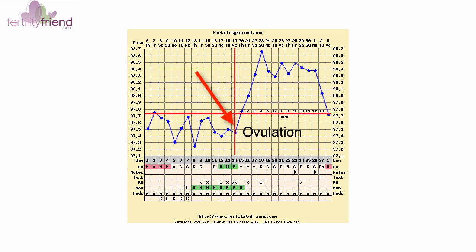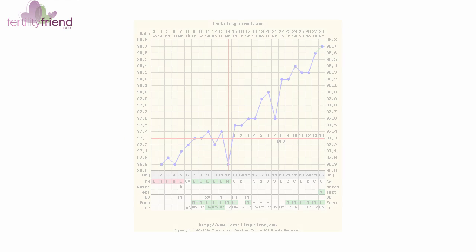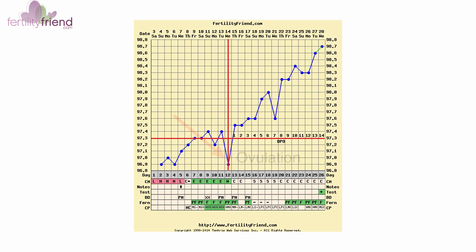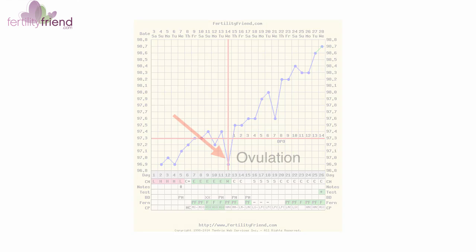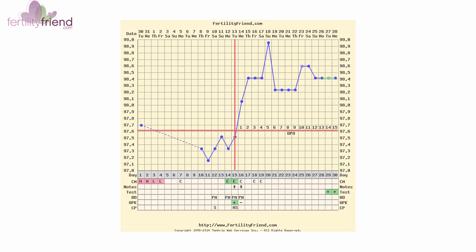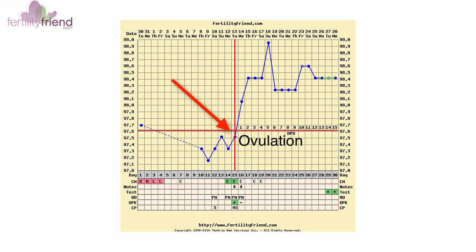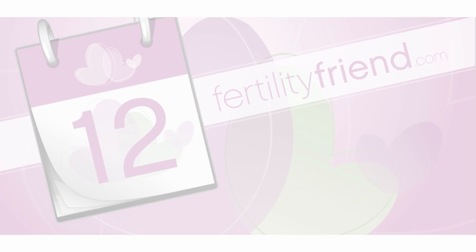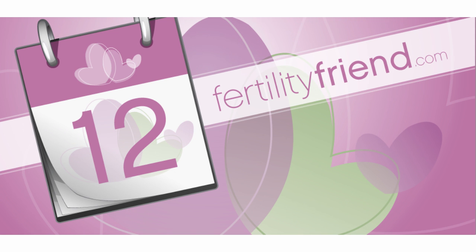We recommend that you enter your BBT in your Fertility Friend app as soon as you take it. With this data, Fertility Friend can pinpoint your ovulation date, evaluate your conception chances, and provide a reasonable date to test for pregnancy, along with other insights about your cycle.